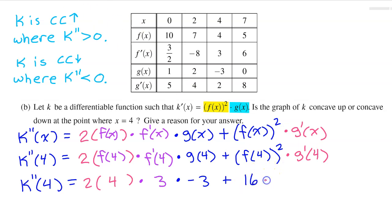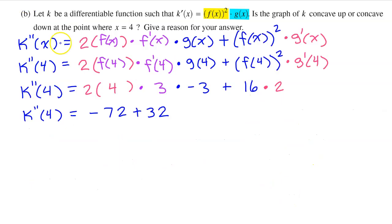And then we have times g prime at 4. g prime at 4 is 2. This simplifies down to negative 72 plus 32, which is less than 0.